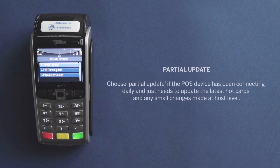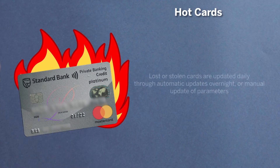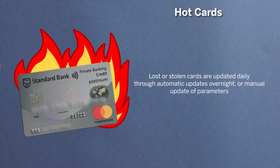You'll be presented with three options. Choose Partial Update if your AutoLink device has been connecting daily but needs to update the latest hotcard file and any small changes made on a host level. Hotcards are cards that are flagged as lost or stolen. This update happens at the bank every day. That's why it's important that you keep your AutoLink device up to date.